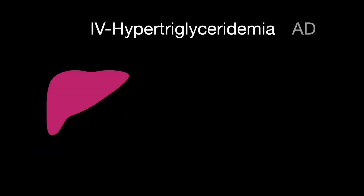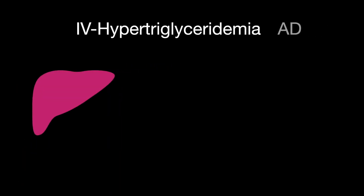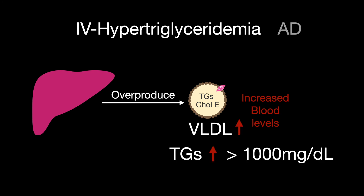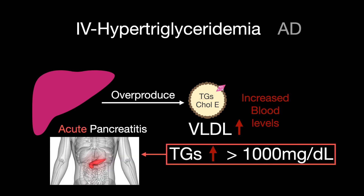Type 4 hypertriglyceridemia is autosomal dominant and is caused when the liver overproduces very low-density lipoproteins. Very low-density lipoproteins and triglycerides build up in the blood, with triglyceride levels greater than 1,000 mg/dL, causing acute pancreatitis.